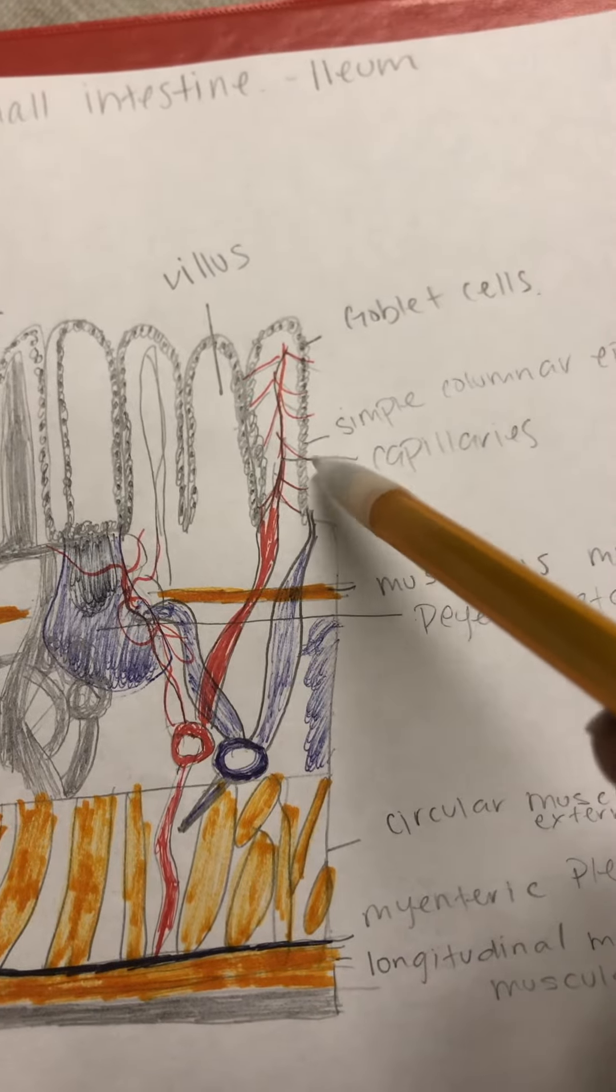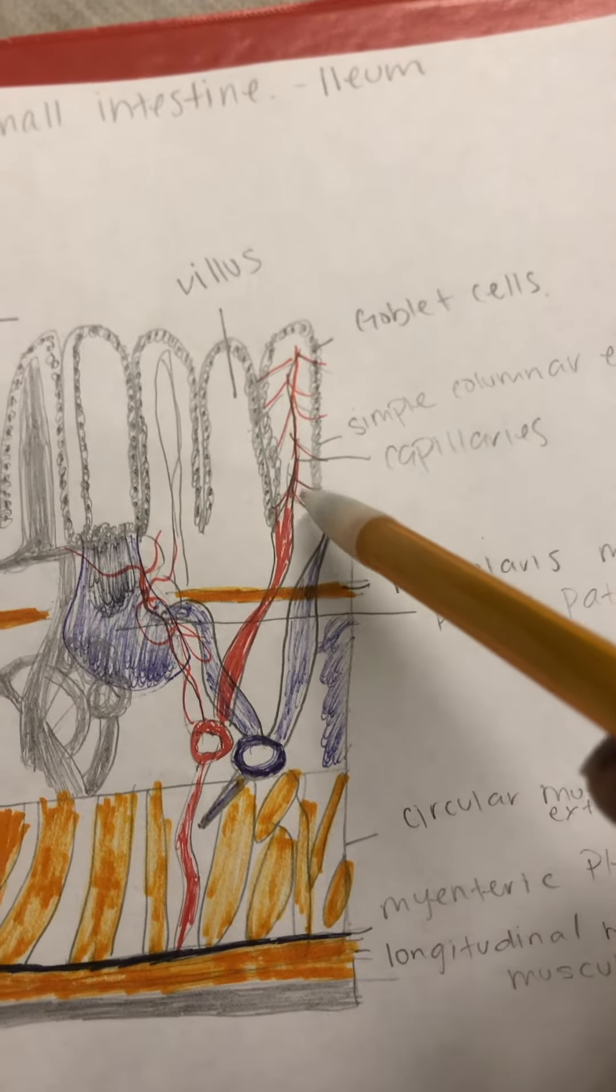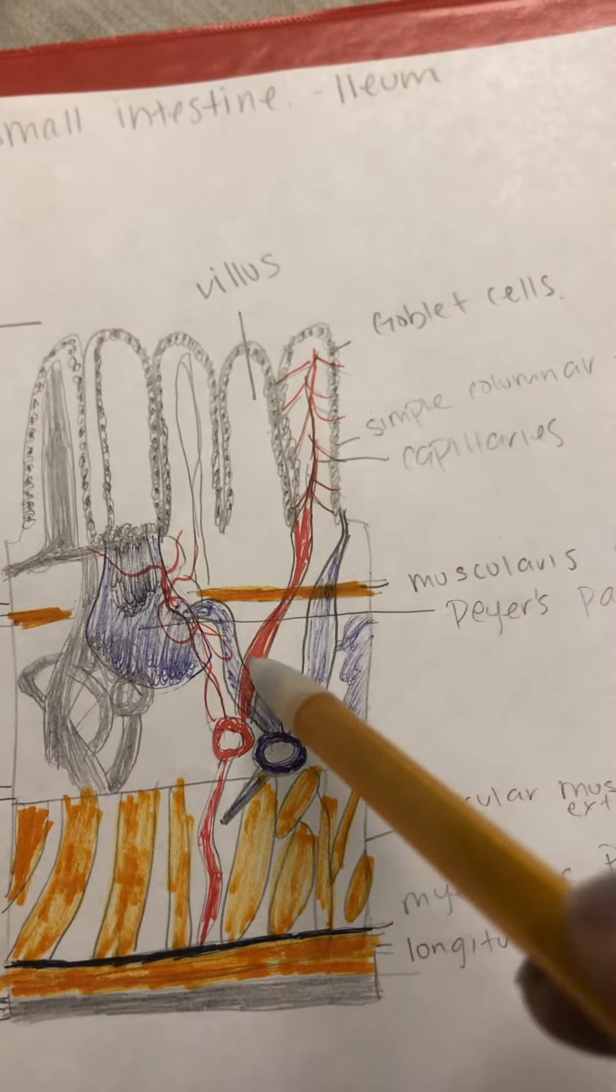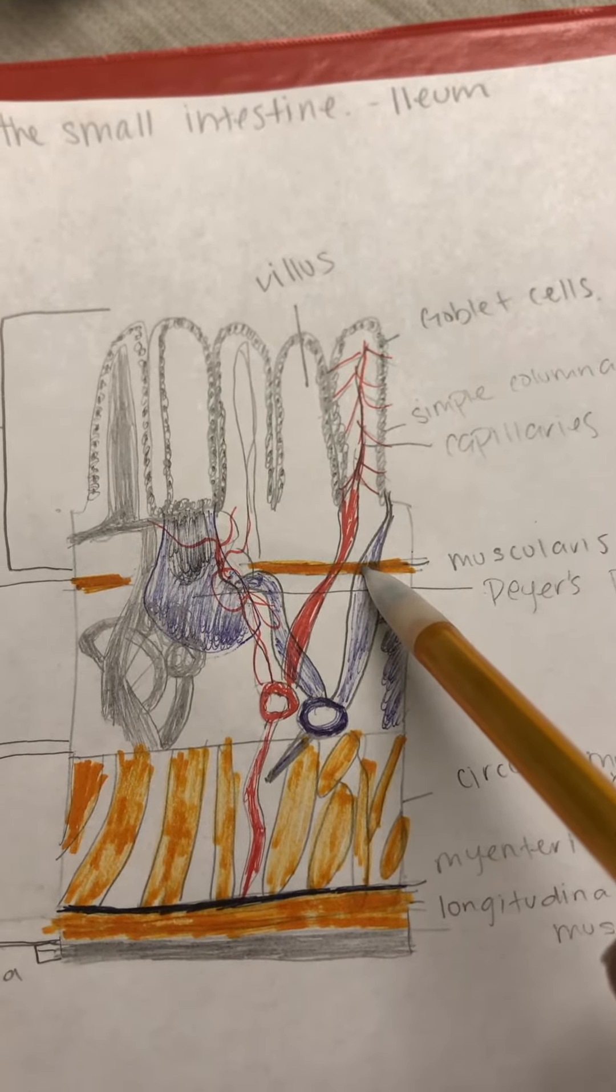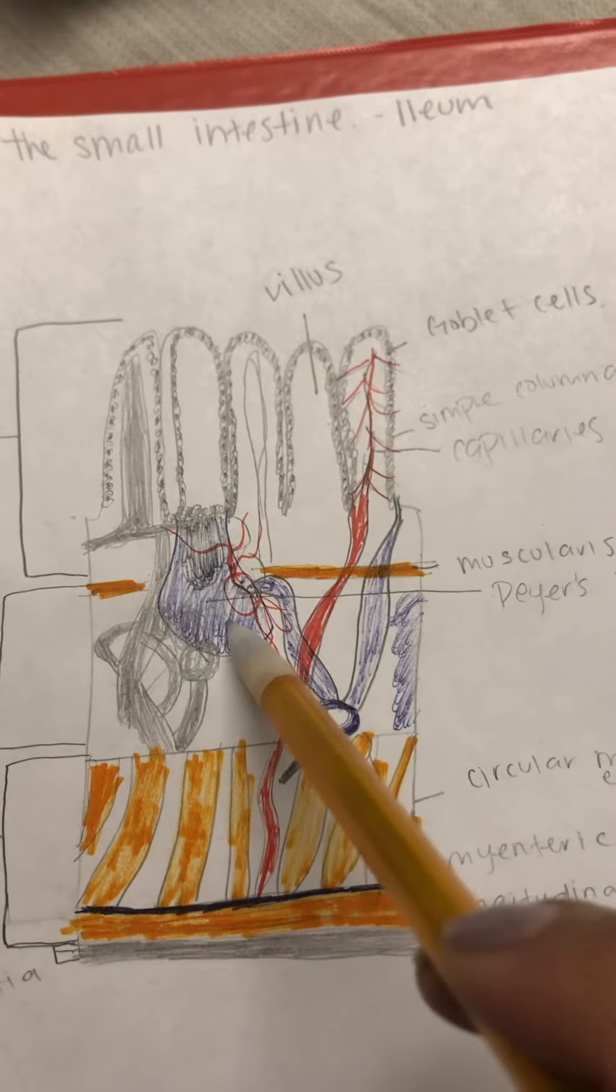These are the capillaries. This little section is the muscularis mucosa. This patch is the Peyer's patch.